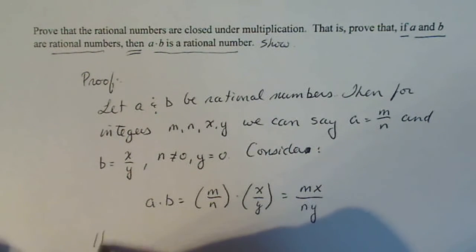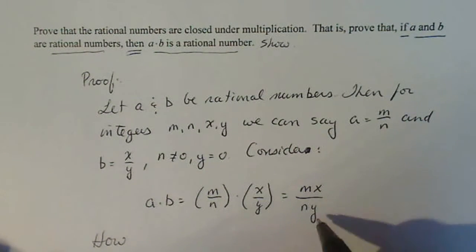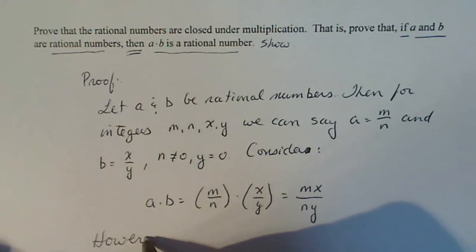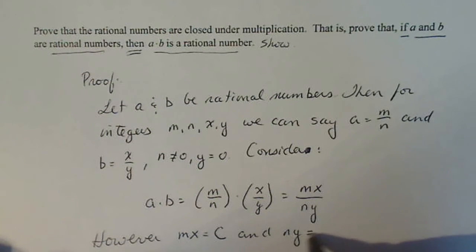And if I just use algebra, that becomes MX over NY. Now at this point, what do we know about MX and NY? However, MX, I'm going to call it capital C, and NY, I'm going to call it capital D, are also integers.